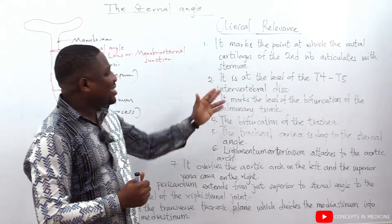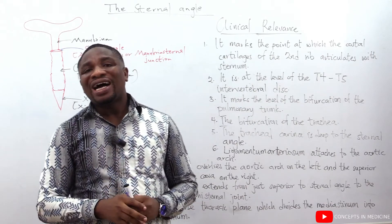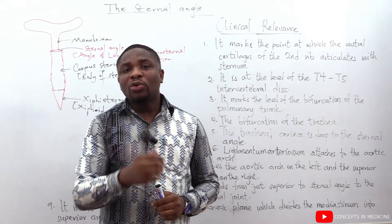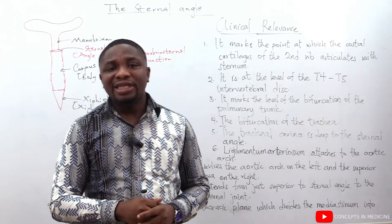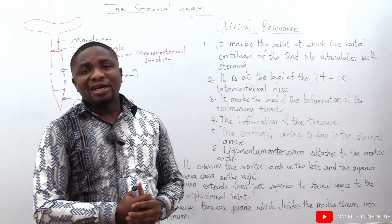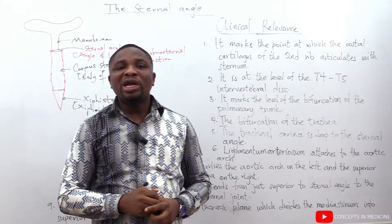Let's move ahead and look at the second clinical relevance. The sternal angle is also at the level of the T4, the 4th thoracic and the T5 intervertebral disc. The next one, the sternal angle also marks the level of the bifurcation of the pulmonary trunk.